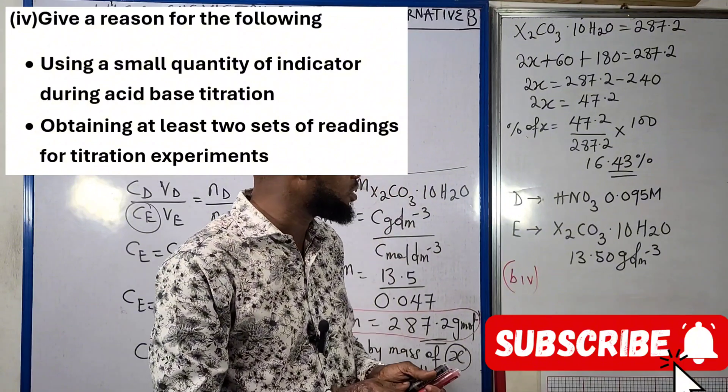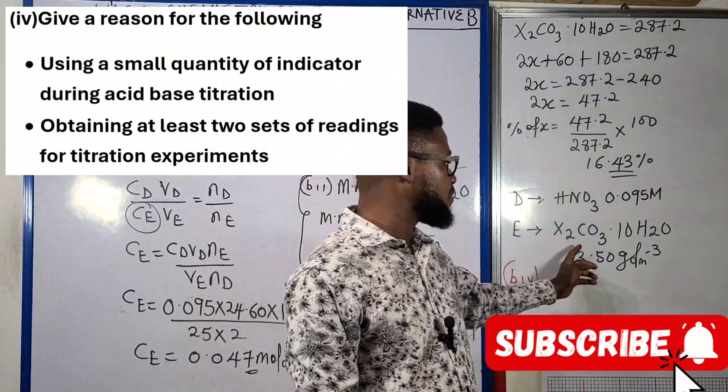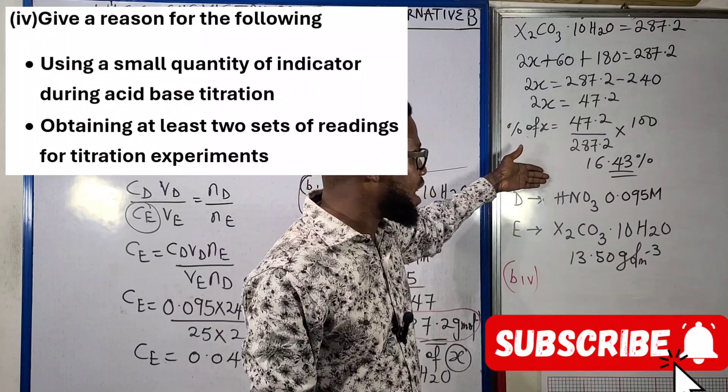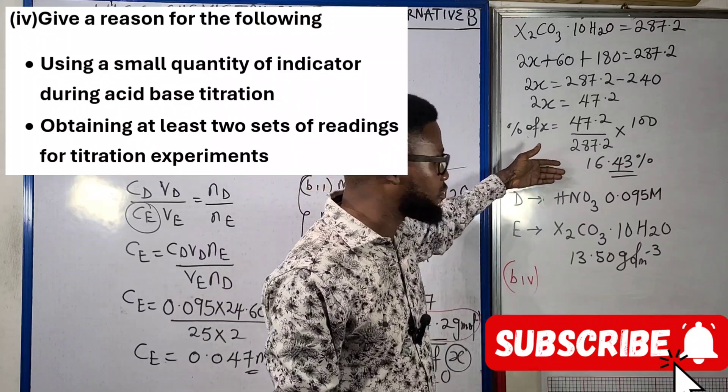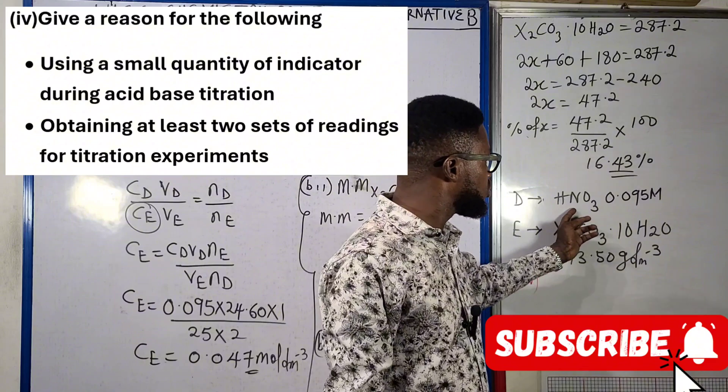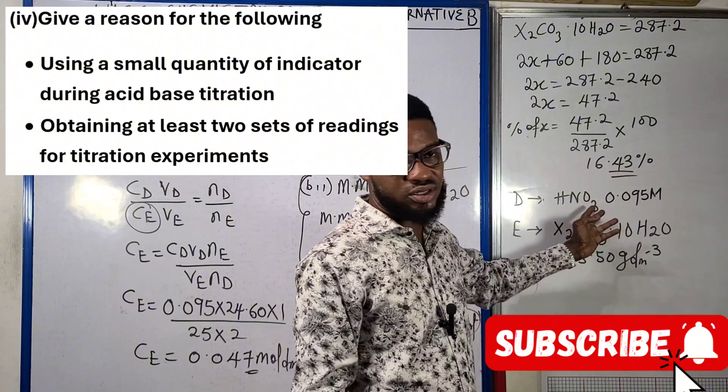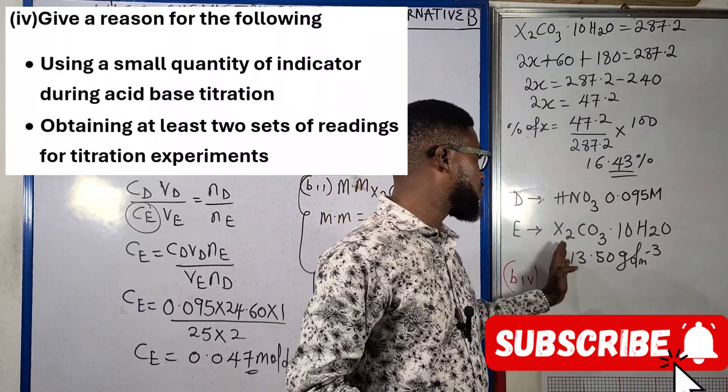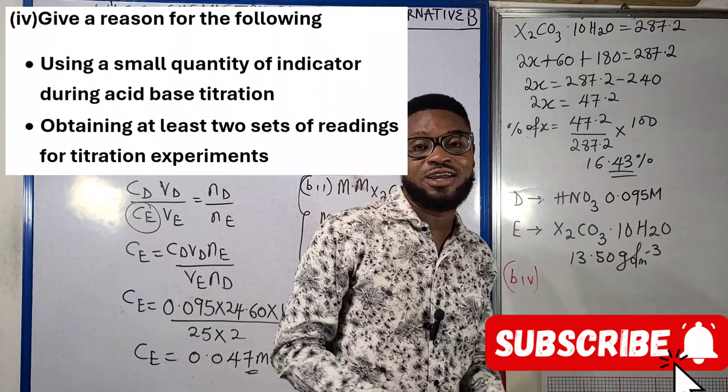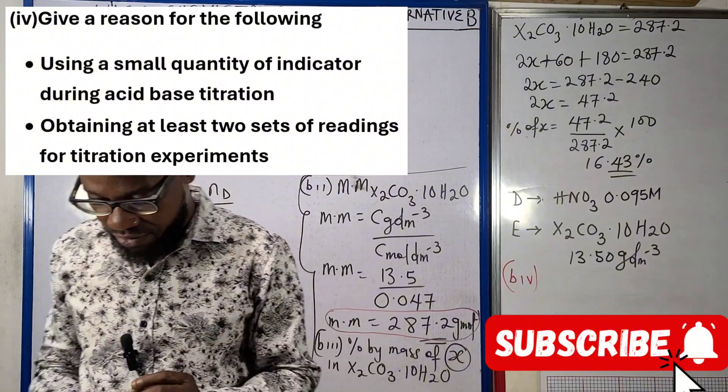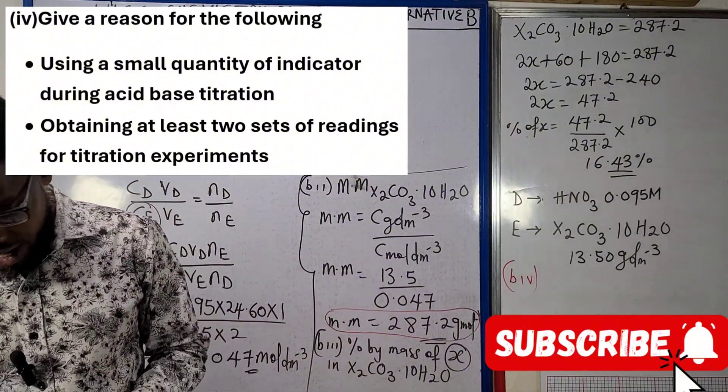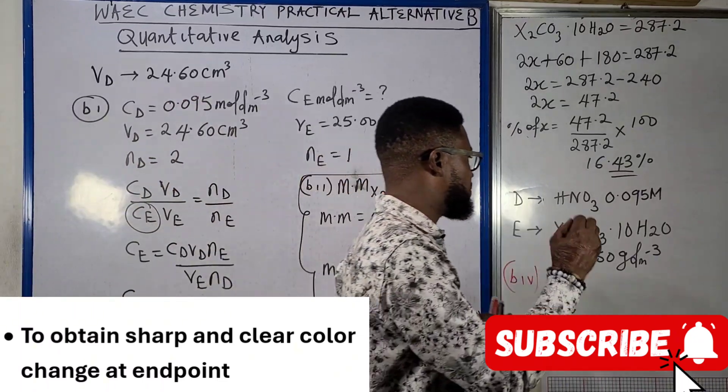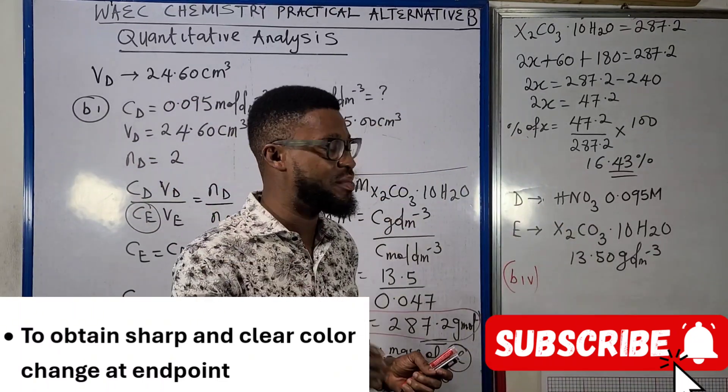You know the quantity of indicator we use during acid-base titration is always about two or three drops. When we add two or three drops of methyl orange in here, it is going to be yellow, and by the time we run in our D, that's our acid from the burette, two or three drops of the acid is just enough to change the color of the whole mixture from yellow to pink.